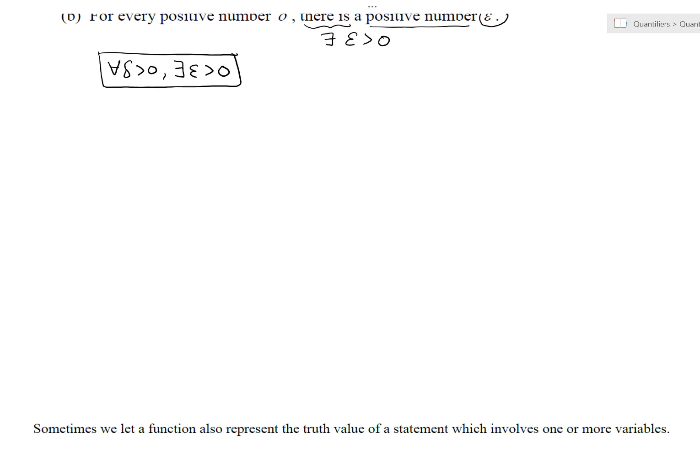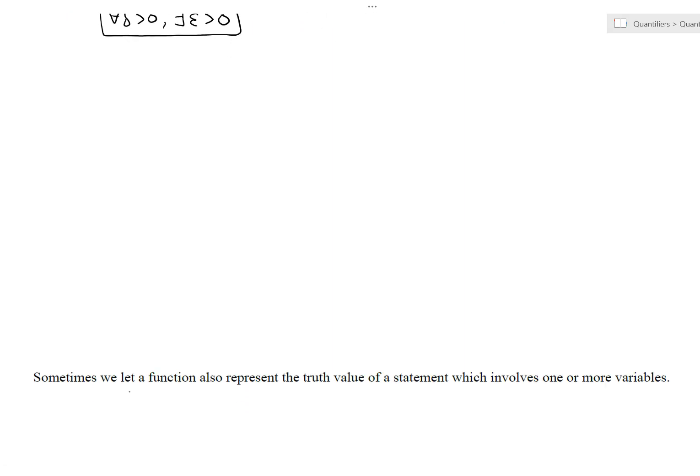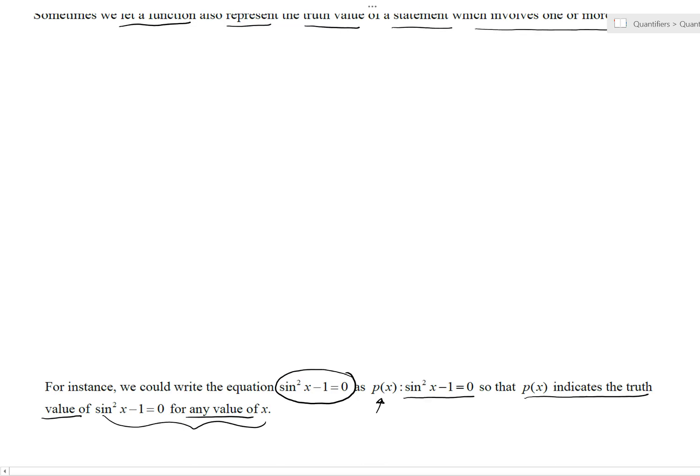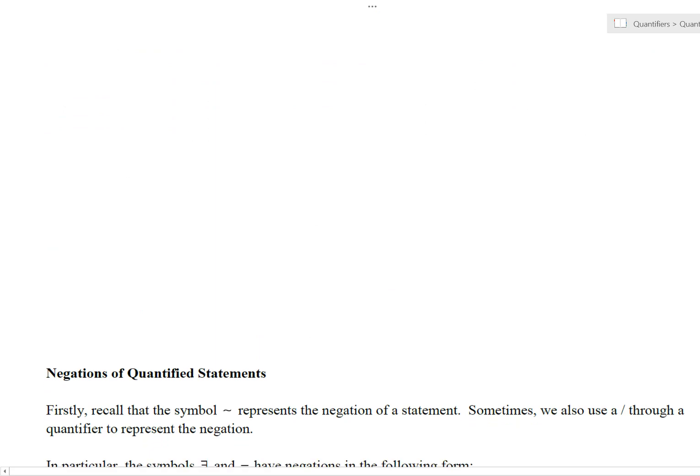What else? Well, there's this situation in which sometimes we let a function represent the truth value of a statement which involves one or more variables. So for instance, say we had this equation right here, sine squared X minus one equals zero. We could just represent that statement by using the function P of X. So we're going to let P of X actually represent this statement's truth value. Whatever we plug in for X into P, it would simultaneously get plugged into the sine squared of X into the statement, and there will be some truth value associated with that. And as we say here, P of X indicates the truth value of that statement for any value of X.